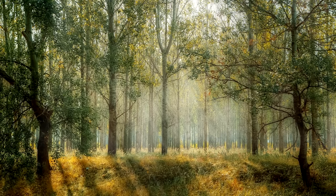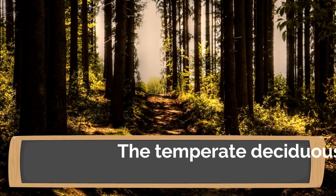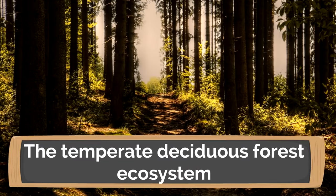Another interesting thing about the temperate deciduous forest ecosystem is that plants are spaced far apart compared to the tropical rainforest. This means the soil is more rich — it's not constantly being drained of nutrients. The rich soil is another non-living thing that plants and animals interact with in this ecosystem. The temperate deciduous forest ecosystem is an interesting one because of the big temperature changes during the year, and it's a wonderful place for animals and plants alike.